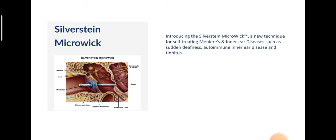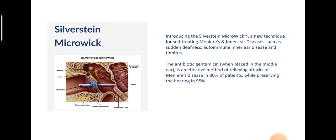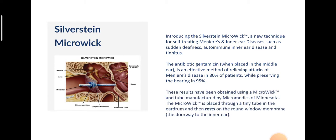We now have what is called the Silverstein microwire, used for treating inner ear diseases such as Meniere's disease, sudden sensorineural hearing loss, autoimmune inner ear disease, and tinnitus. The antibiotic gentamicin is an effective method of relieving attacks of Meniere's disease in 80% of patients. These results have been obtained using a microwire placed through a tiny tube in the eardrum, and the microwire rests on the round window membrane, thereby introducing medications into the inner ear.